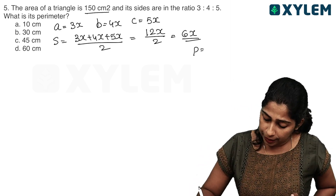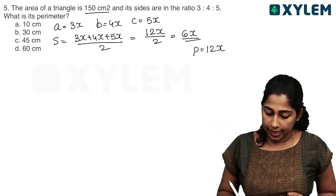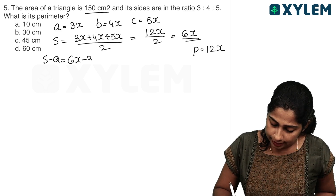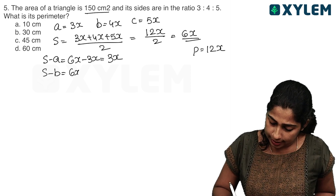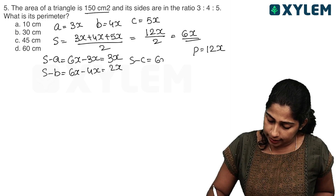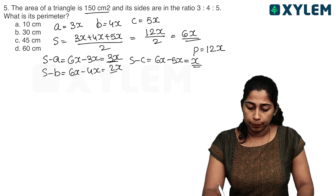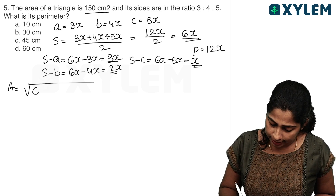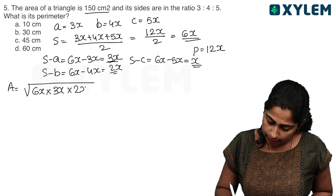Perimeter is equal to 12x, since a plus b plus c equals 12x. S minus A is 6x minus 3x equals 3x. S minus B is 6x minus 4x equals 2x. S minus C is 6x minus 5x equals x. Area equals root of S into (S minus A) into (S minus B) into (S minus C), which is root of 6x into 3x into 2x into x.